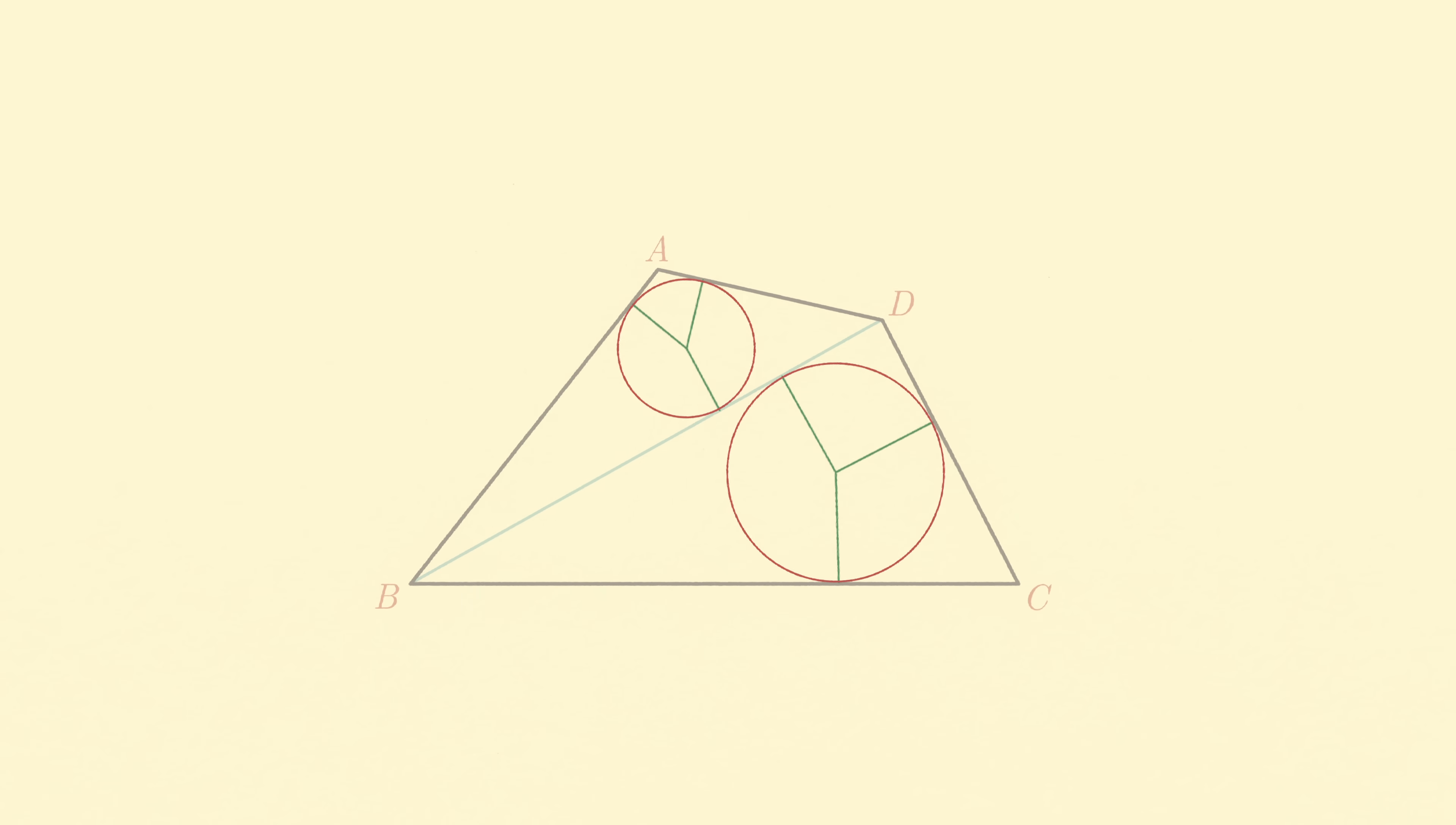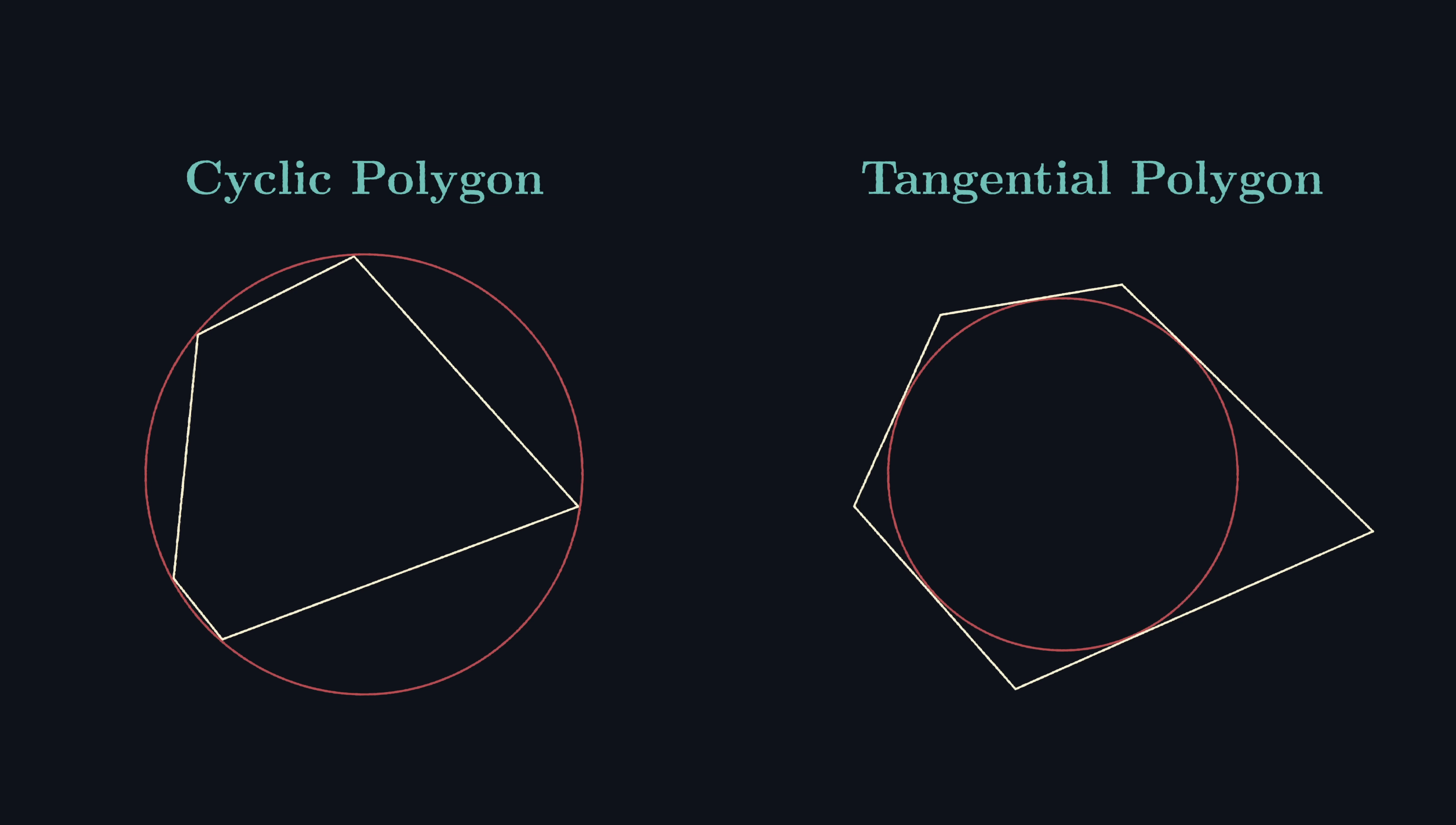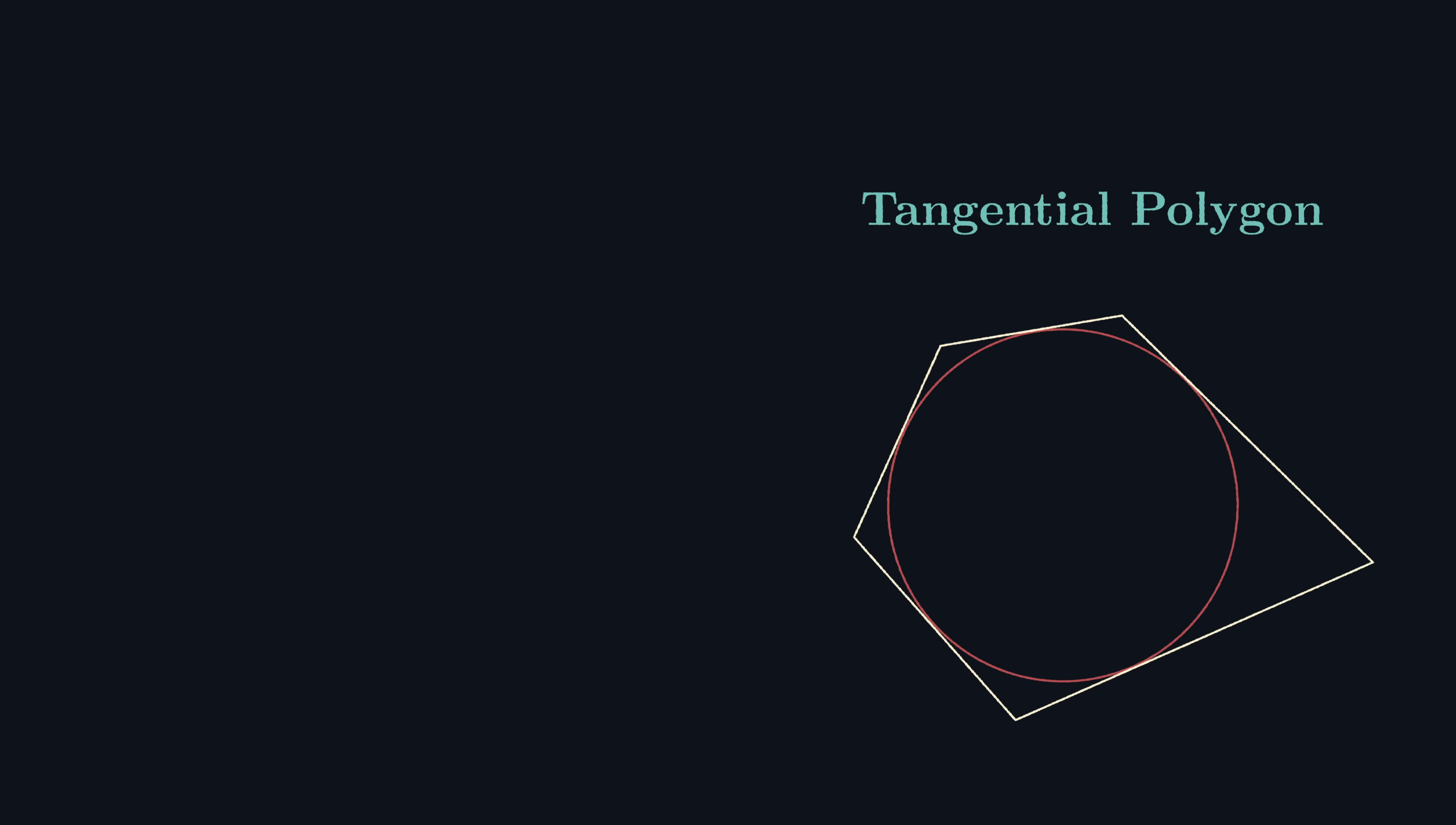Which brings us on to the idea of a tangential polygon. You're probably more likely to be familiar with the idea of a cyclic polygon. That is, a polygon whose vertices all lie on the same circle. On the other hand, a polygon is said to be tangential if there exists a circle where all the sides of this polygon are tangents to this circle.